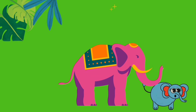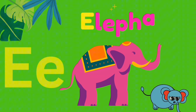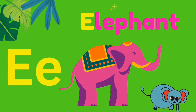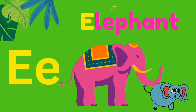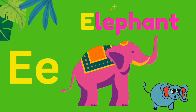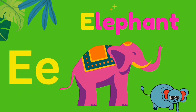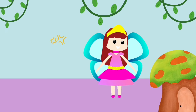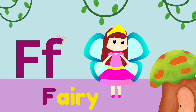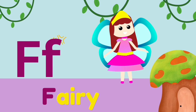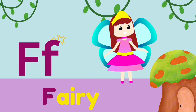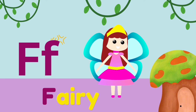E is for Elephant. E, E, Elephant. E, Elephant. F is for Fairy. Fairy. F, Fairy.